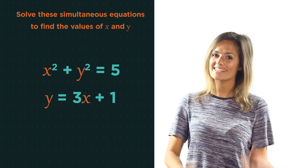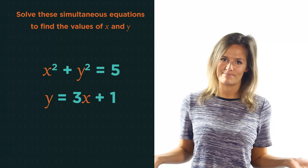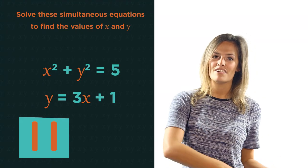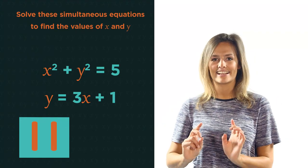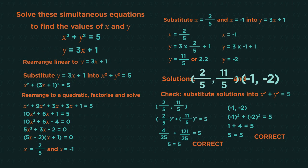So here's one final one for you to do. This time it's a circle and a linear equation, but it's the exact same process. Pause the video, find both solutions, and click play when you're ready. Did you get two fifths eleven fifths and negative one negative two?